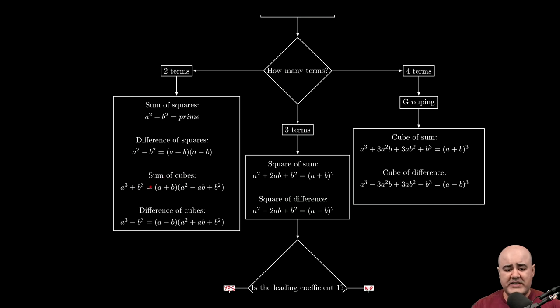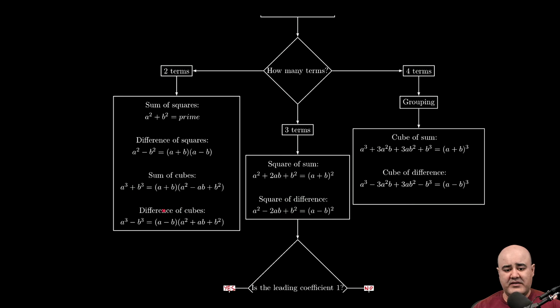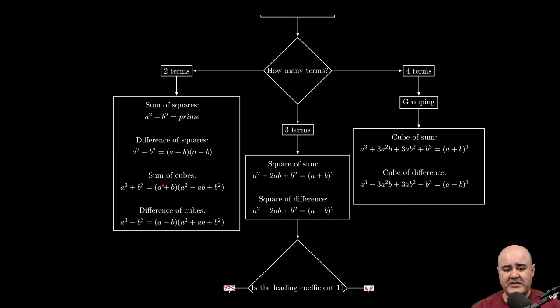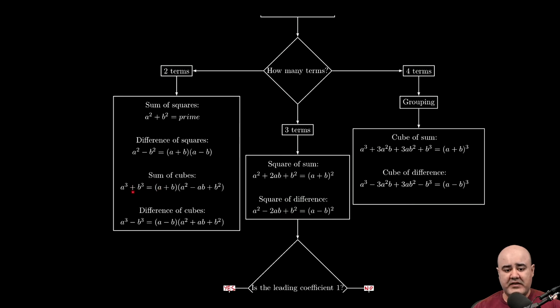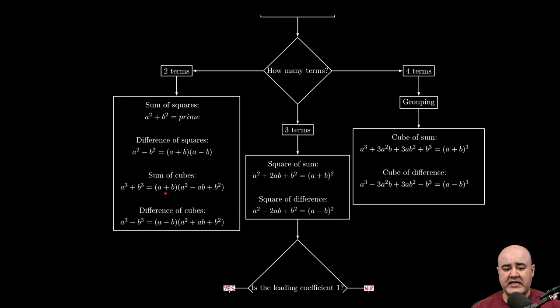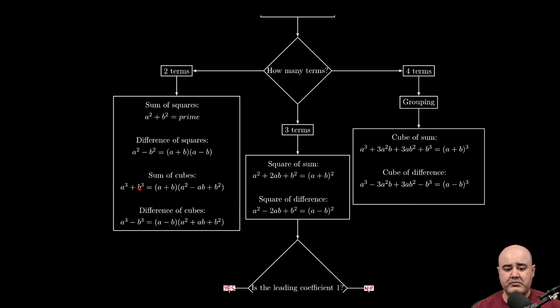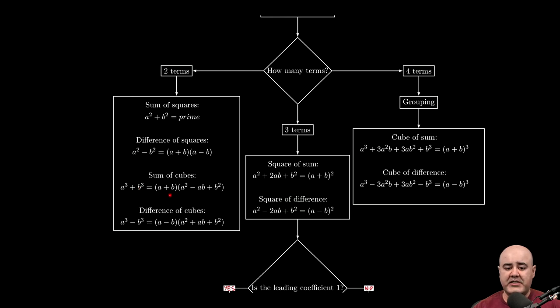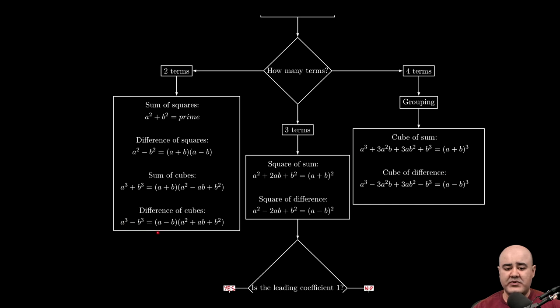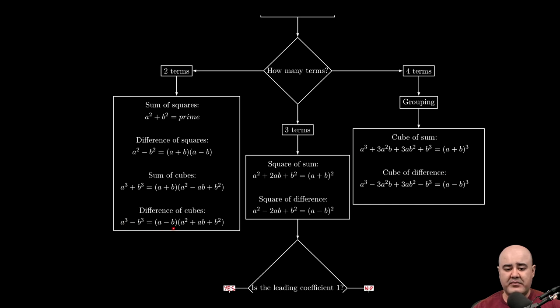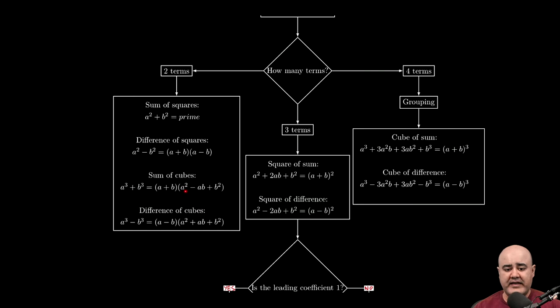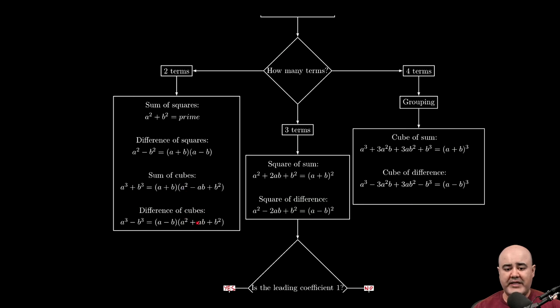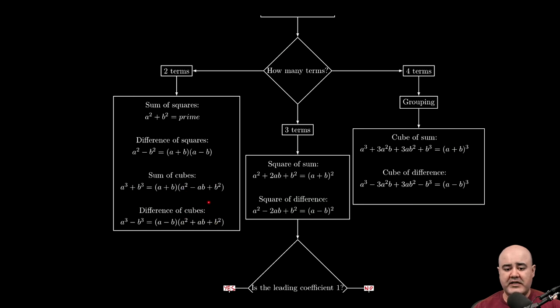The sum of cubes is a³ + b³. These two, the sum of cubes and difference of cubes, are the same formula, except you'll notice that there's some sign changes. Whatever the sign in the original problem, the same sign appears in the binomial. So if you have a³ + b³, you'll see a + b here. If you have a³ - b³, you'll see a - b here. A little memory trick. And again, you have a², a², ab, ab, b², b². However, the sign on the middle term, on the ab term, is the opposite of the sign in the problem.